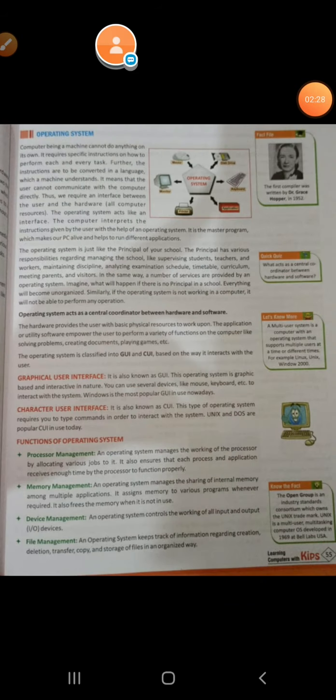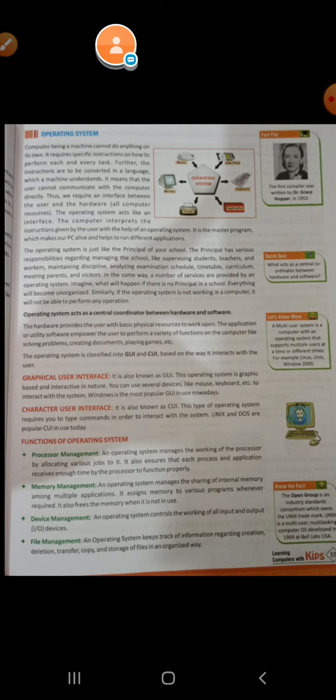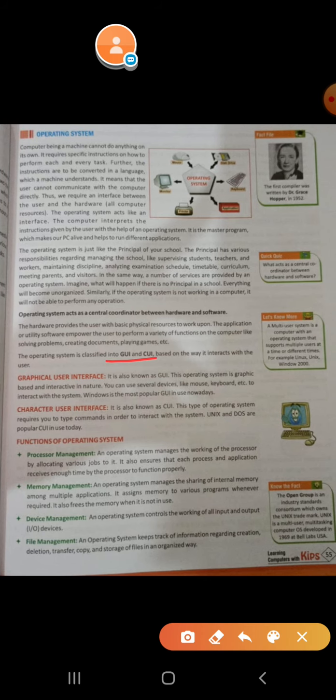The first type is the operating system. What is an operating system? Simply defined, an operating system is an interface between the user and the computer. If you have to use and run a computer, the operating system is what the user uses to interact with the computer. The operating system is classified into two types: GUI (Graphical User Interface) and CUI (Character User Interface).